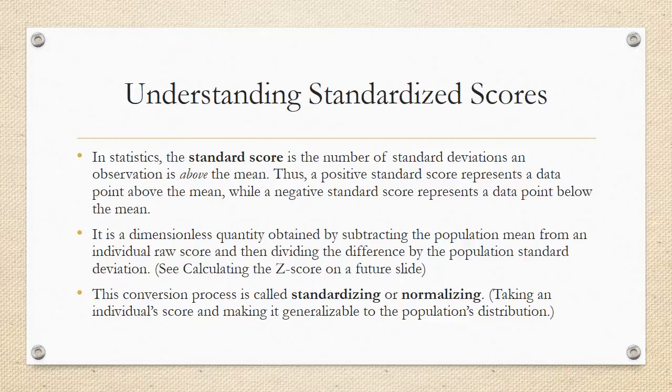Understanding standardized scores. As I said previously, a standard score is a score that can be placed on the bell curve. In statistics, the standard score is the number of standard deviations an observation, or data point, is above the mean. So a positive score represents a data point above the mean, and a negative score represents a data point below the mean.